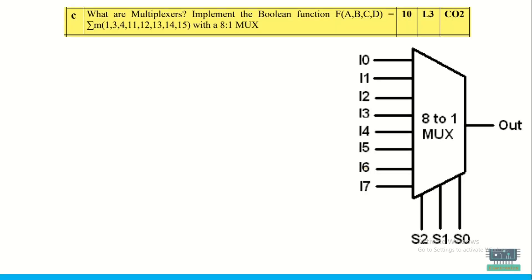The first thing is that a multiplexer is a device that has multiple inputs and a single output, so accordingly we need select lines. If we have 8 inputs, we need 3 select lines for a single output. For the 3 select lines we give different values from 0 0 0 to 1 1 1. When 0 0 0 is the select line, it selects whatever input is at i0 to the output. If 0 0 1 is the select input, i1 will be selected at the output.